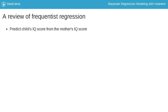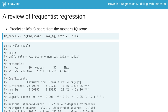We can estimate a frequentist linear regression by using the lm function. For example, we can predict a child's score from the mother's IQ. We can then look at a summary of the model. This output should look familiar. We have information about the model's residuals, coefficient estimates, and information about how our model is performing.